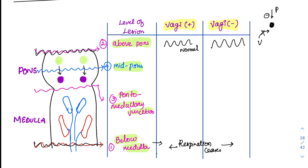For the pontomedullary junction lesion: when you cut here, all pontine centers are removed and only the medullary neurons come down. The pons was acting as a fine tuner — now the fine tuning is gone. So respiration will not be fine-tuned and will be irregular.